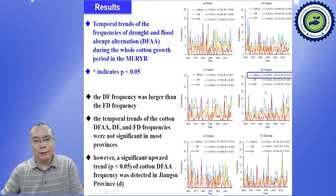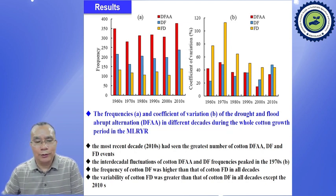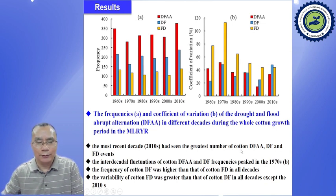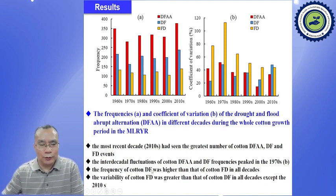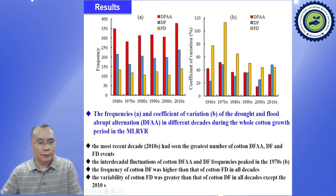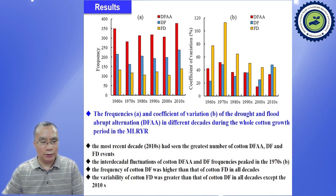This figure shows the frequencies and the coefficient of variation of drought and flood alternation in different decades during the whole cotton growth period. The most recent decades have seen the greatest number of cotton DFAA, DF, and FD events compared with earlier years. The inter-decade fluctuations of cotton DFAA and DF frequencies peaked in the 1970s. The frequency of cotton DF was higher than that of cotton FD in all decades. The variability of cotton FD was greater than that of cotton DF in all decades except 2010.